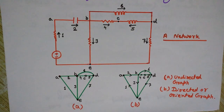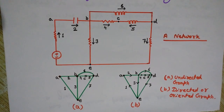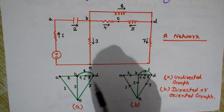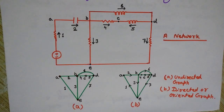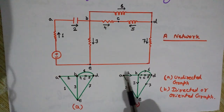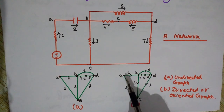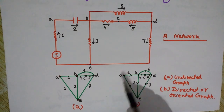So you now understand what is a graph and what are nodes and branches. A graph is simply a representation or geometrical interconnection of the elements of a network. We call a graph a connected graph if and only if there is a path directly or indirectly between every pair of nodes. We have A, B, C, D, E — these are the five nodes and there are seven branches in total in this graph.